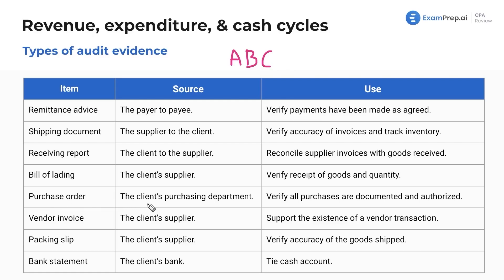The purchase order is issued by the client's purchasing department — essentially telling the supplier they want to buy something, like planks of wood. It is used to verify that all purchases are documented and authorized. This matters because without authorization, an employee could issue purchase orders for goods and use them for personal benefit.